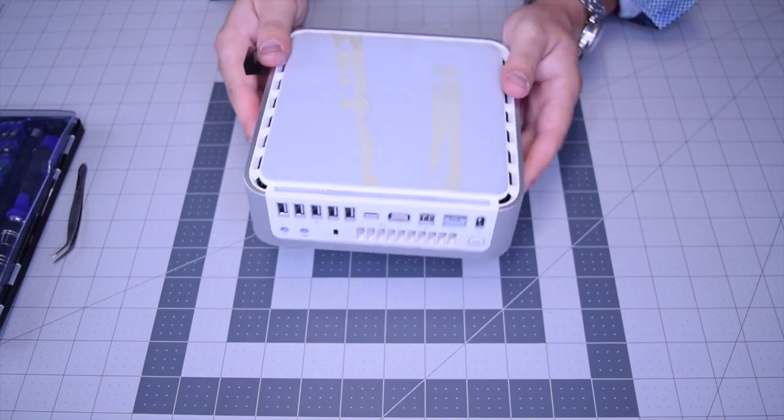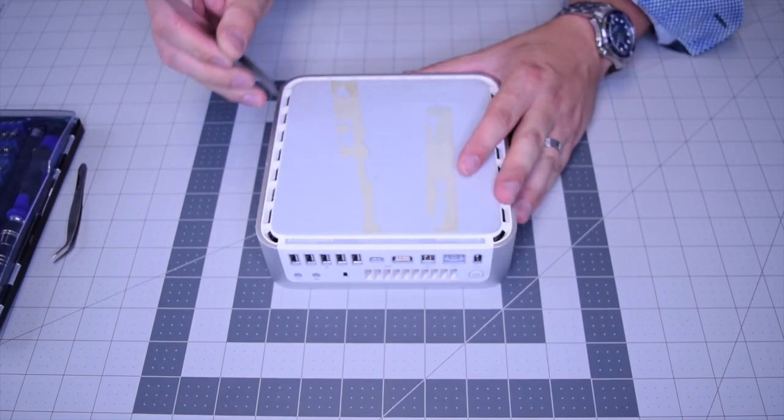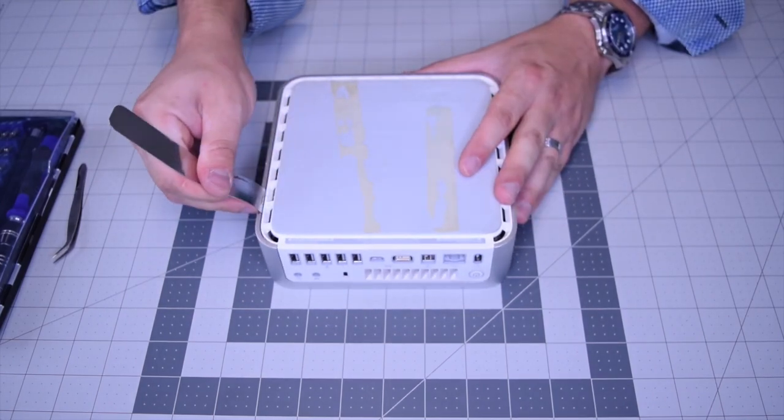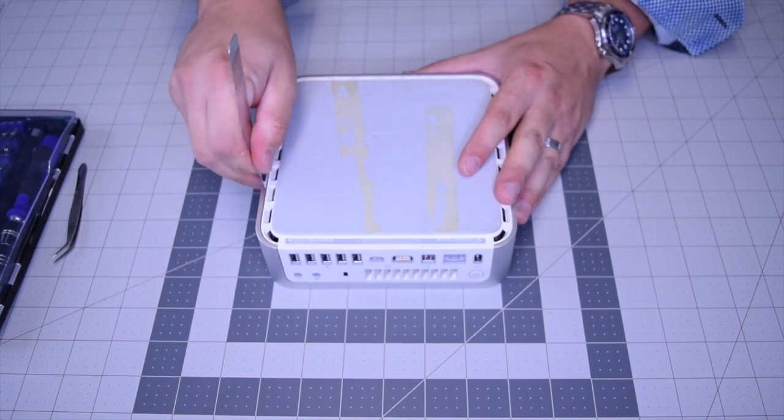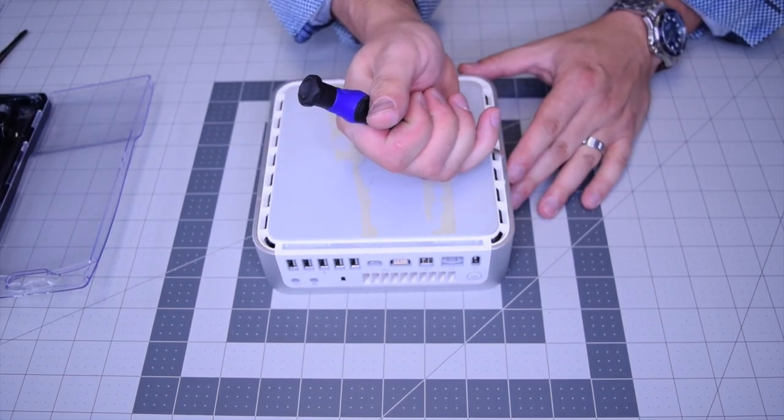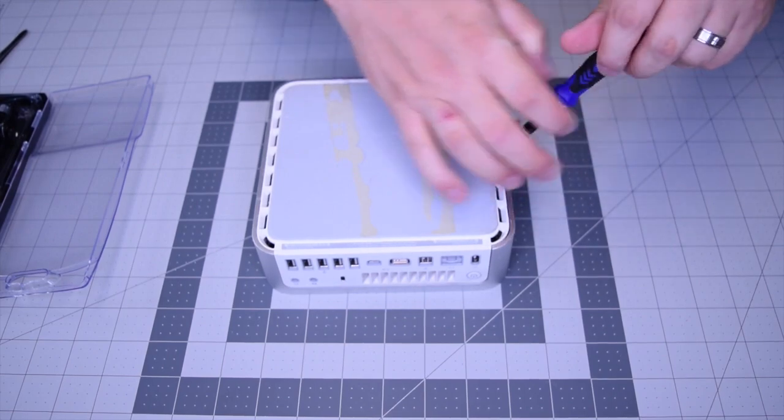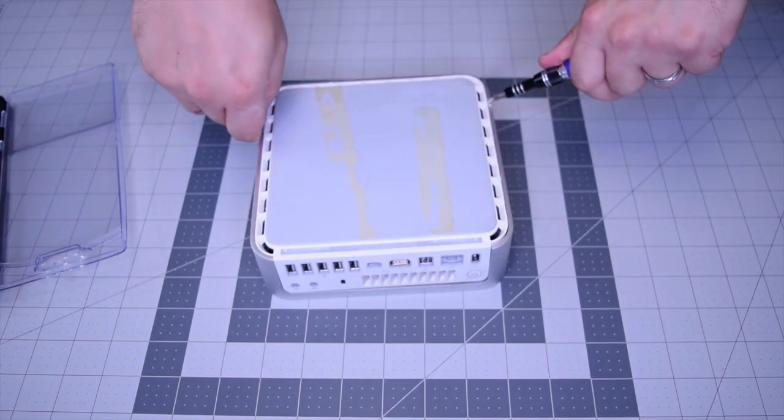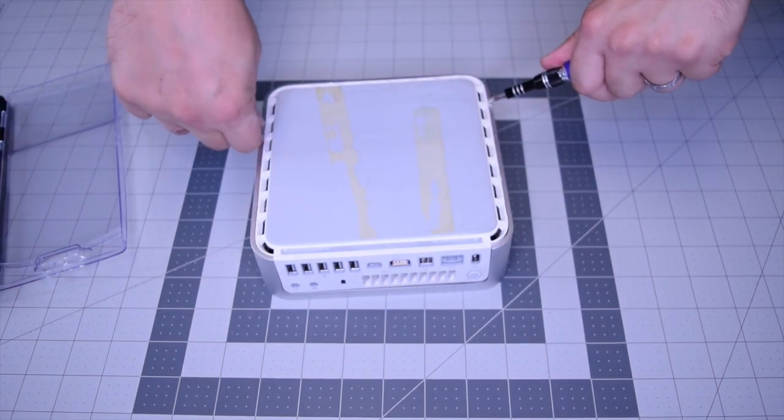Go ahead and start by flipping over the Mac and prying into the seam on the right side. We're going to need to pry in from both sides, so use the flat-headed screwdriver as a prying tool to come in from the opposite side.